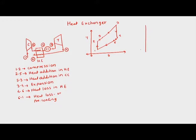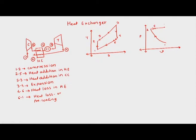Now our job is to denote this cycle on the T-S diagram. On the T axis and S axis: 1 to 2 is isentropic compression, 2 to 5 is constant pressure heat addition in the heat exchanger, 5 to 3 continues at the same pressure in the combustion chamber, 3 to 4 is expansion, 4 to 6 is heat loss in the heat exchanger, and 6 to 1 is pre-cooling. On the P-V diagram: 1 to 2 is isentropic compression, 2 to 5 is isobaric heat addition, 3 to 4 is expansion in the turbine, 4 to 6 is heat loss in the heat exchanger, and 6 to 1 is heat loss in the pre-cooler.